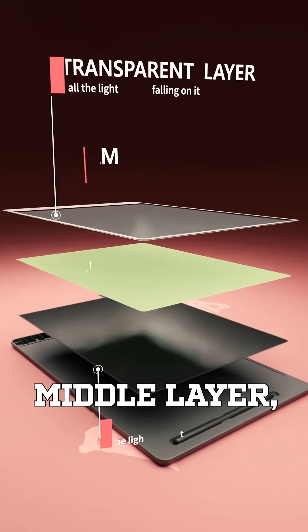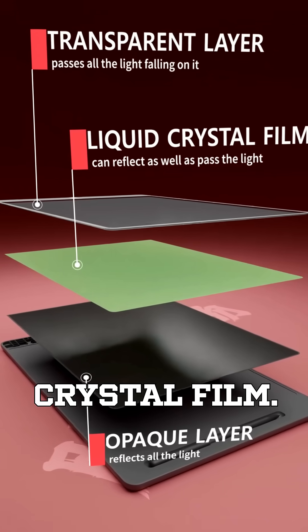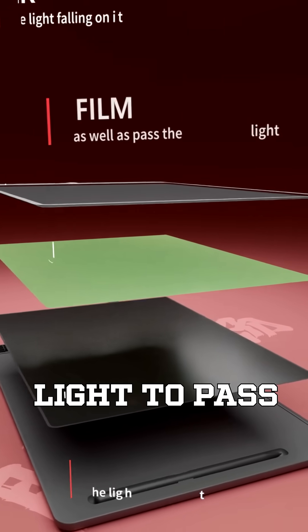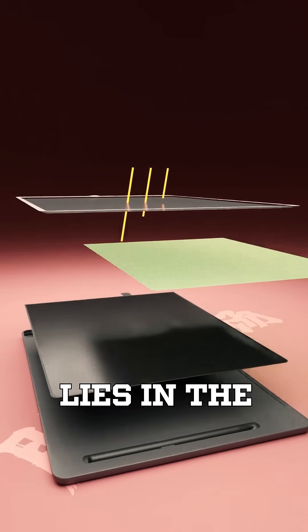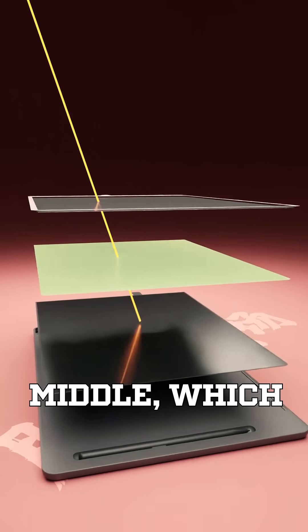A transparent top layer, a middle layer, and a strictly aligned liquid crystal film. The transparent layer allows light to pass through. The bottom reflective layer bounces that light back. But the real magic lies in the liquid crystal film in the middle, which interacts with both.